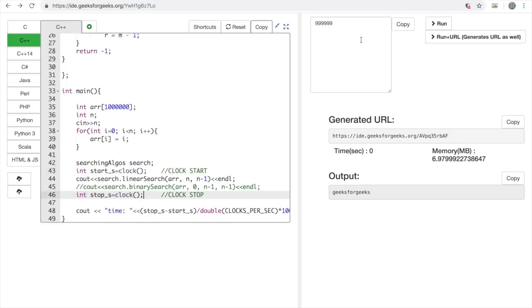So first let's provide a large input and start with linear search. As you can see, linear search takes 2.963 seconds to execute a large input.